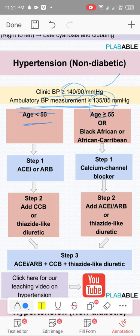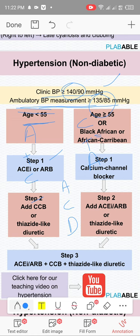Drug treatment: three classes — ACE inhibitors/ARBs, calcium channel blockers, and diuretics. For patients less than 55, start with ACE inhibitors or ARBs. For patients greater than 55 or Black African/Afro-Caribbean, start with calcium channel blocker. If not controlled, add C to A or A to C. Third step: add diuretics.